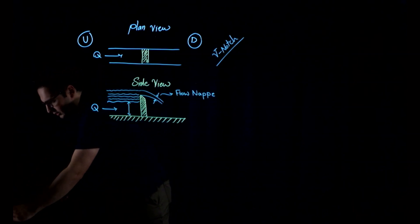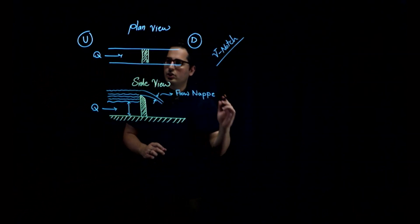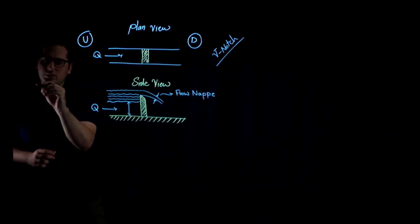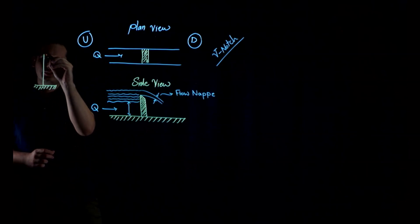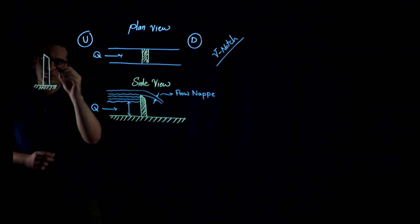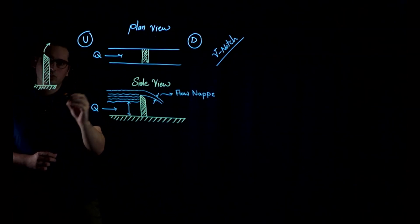Type number one is sharp-crested weir. They're called sharp-crested weir because if I want to show you a cross-sectional of sharp-crested weir, you can see the tip of it, the crest of it, is sharp. So this is called the sharp-crested weir.